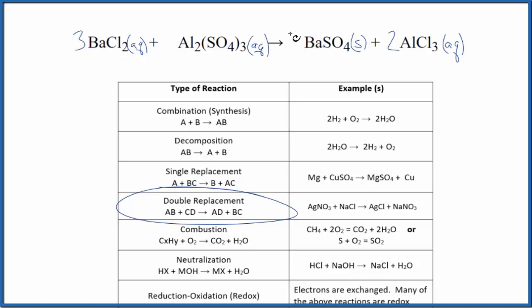Three bariums. So three here. That gives us three bariums and three sulfates, which is good. We have three sulfates here. So this is the balanced equation.